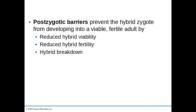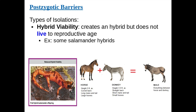Those are all the prezygotic barriers — ways to prevent reproductive isolation before a zygote is formed. But in some cases, a zygote may form from two different species, and then postzygotic barriers prevent that zygote from developing into a viable, fertile adult. One example is reduced hybrid viability, where the zygote exists but never develops into an organism that can be born — it breaks down beforehand. Salamanders are an example of this.